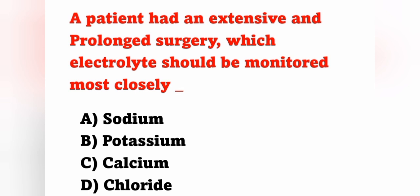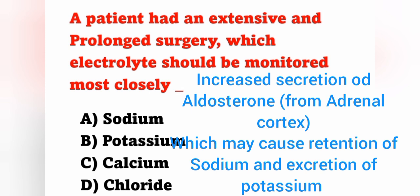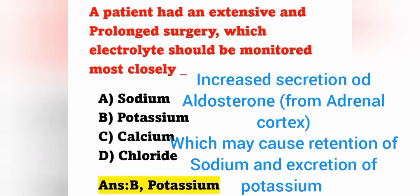Next question: a patient had an extensive and prolonged surgery. Which electrolyte should be monitored most closely? Option A: sodium. Option B: potassium. Option C: calcium. Option D: chloride. During extensive surgery, there is increased secretion of aldosterone in the patient's body. Aldosterone is a hormone secreted by the adrenal cortex. It causes retention of sodium and excretion of potassium. So we have to monitor serum potassium level. Option B is the correct answer.